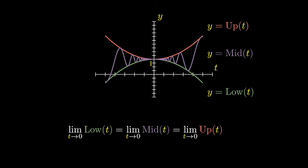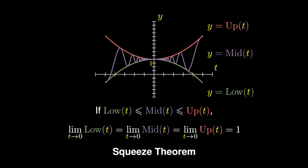And since Up(t) has a y-intercept of 1, its limit must equal 1. This is known as the squeeze theorem which we can use to derive those crucial limits that we've seen earlier.